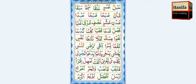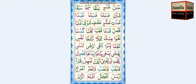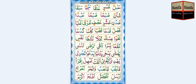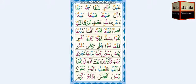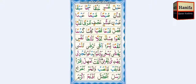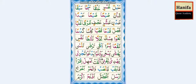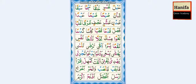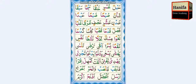Ya, Khaf, Fatha — yakh. Qaima, Fatha — ya. Shay. Ya, Sin, Fatha — yes. Ain, Qaima, Fatha — a. Yas-i. Ya, Ta, Fatha — yet. Lam, Waw, Damma — lu. Yad-lu. Ya, Dal, Fatha — yad. Ayn, Waw, Damma — uw. Yad-uw.